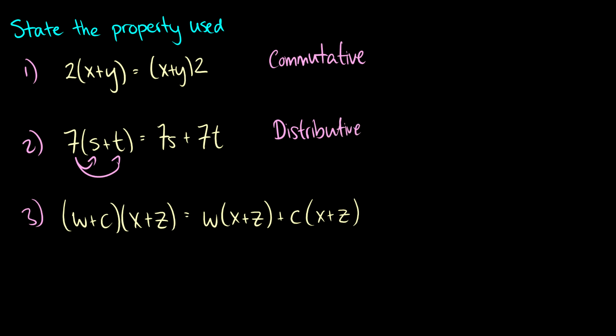Now, what about this third one? Well, again, we just put w to x and z and then c to x and z. So once again, this is just a distributed property, except we've extended it just a little bit. We've said, okay, here's what we had before, let's just do it with two values instead of one.